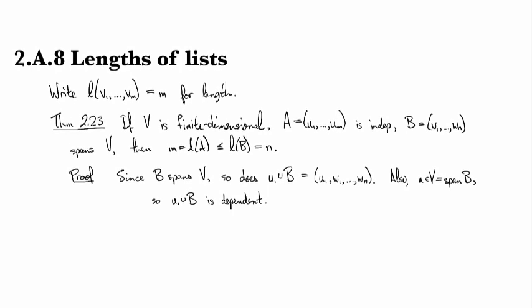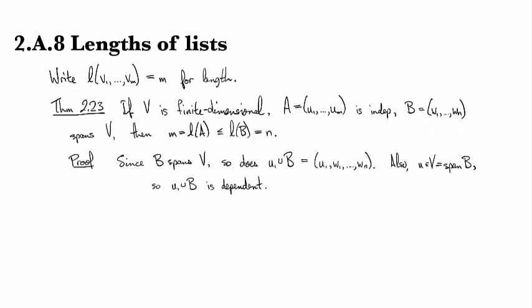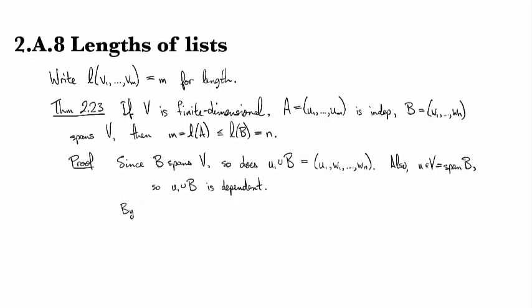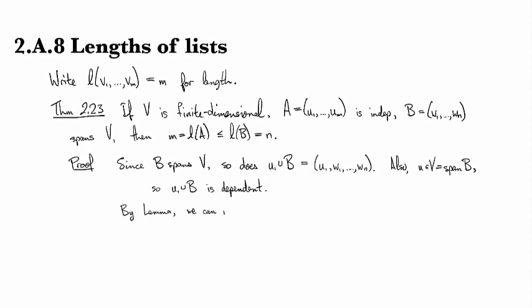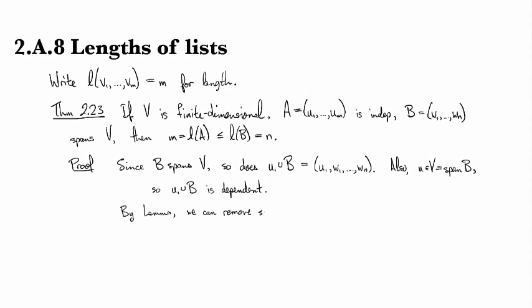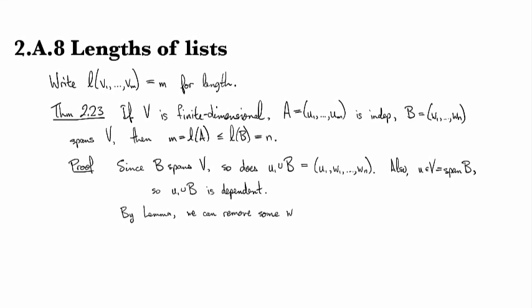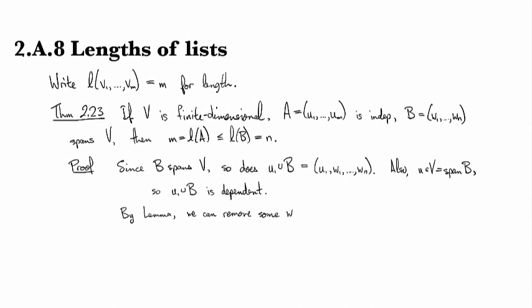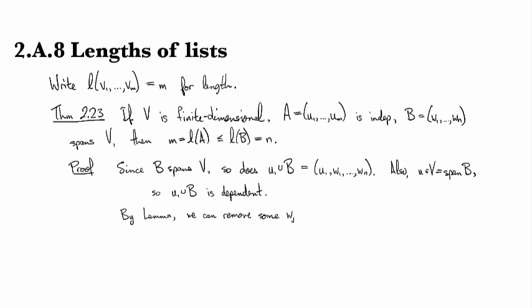Because U is in the span, so it can be written as a linear combination of the Ws. So by the lemma then, by the linear dependence lemma, we can remove some W_J. And I don't know which J it is. So I'm going to include a second subscript. So J1 is going to be the index of the first W that gets removed from the list.